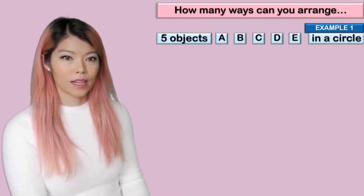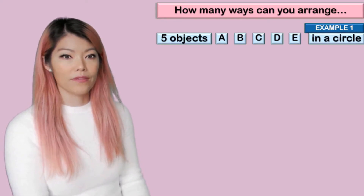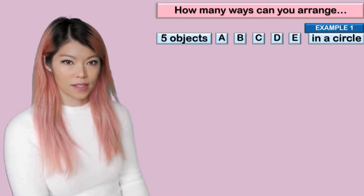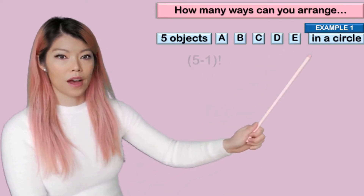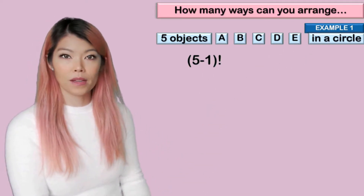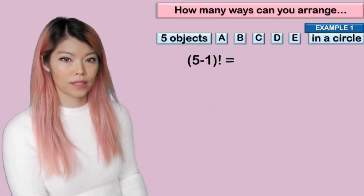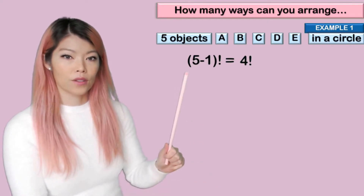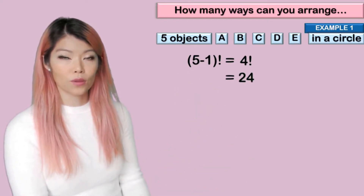Let's use some examples. How many ways can you arrange five objects in a circle? So n is five, so (n − 1) factorial, which is (5 − 1) factorial = four factorial. In other words, 24.